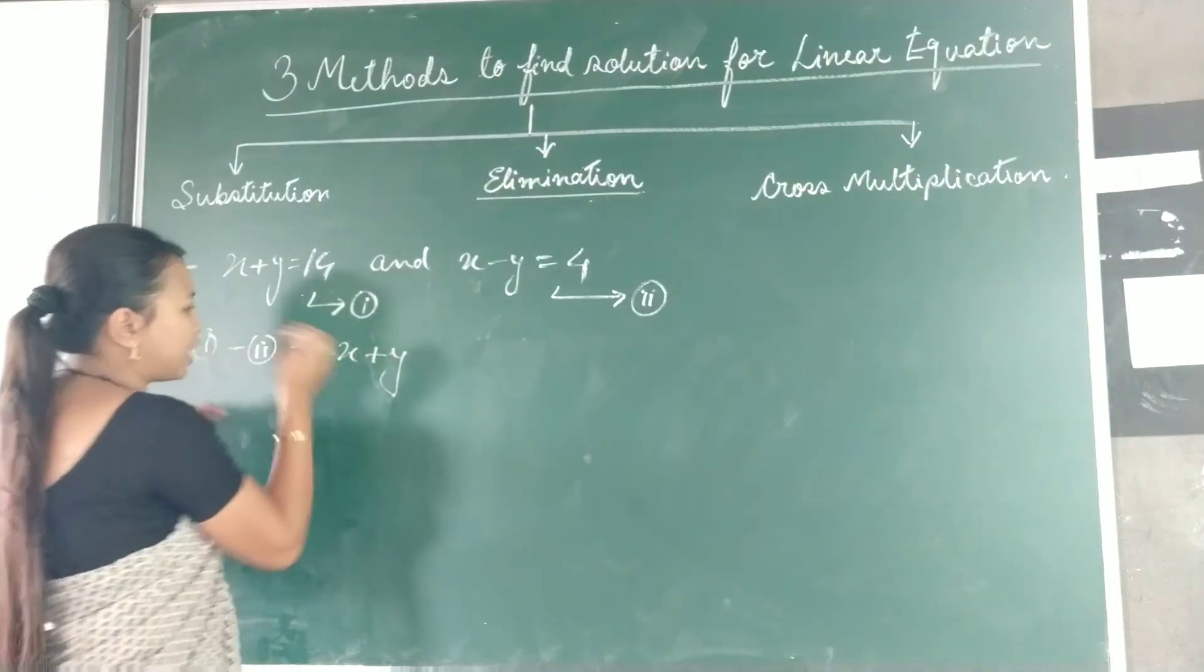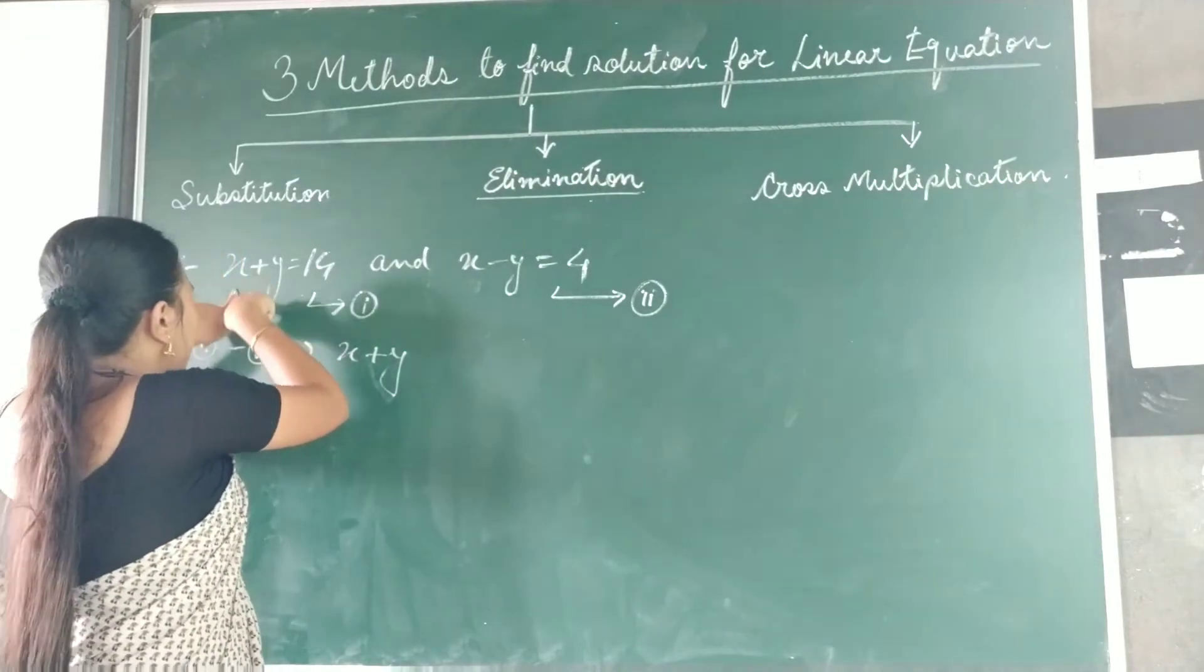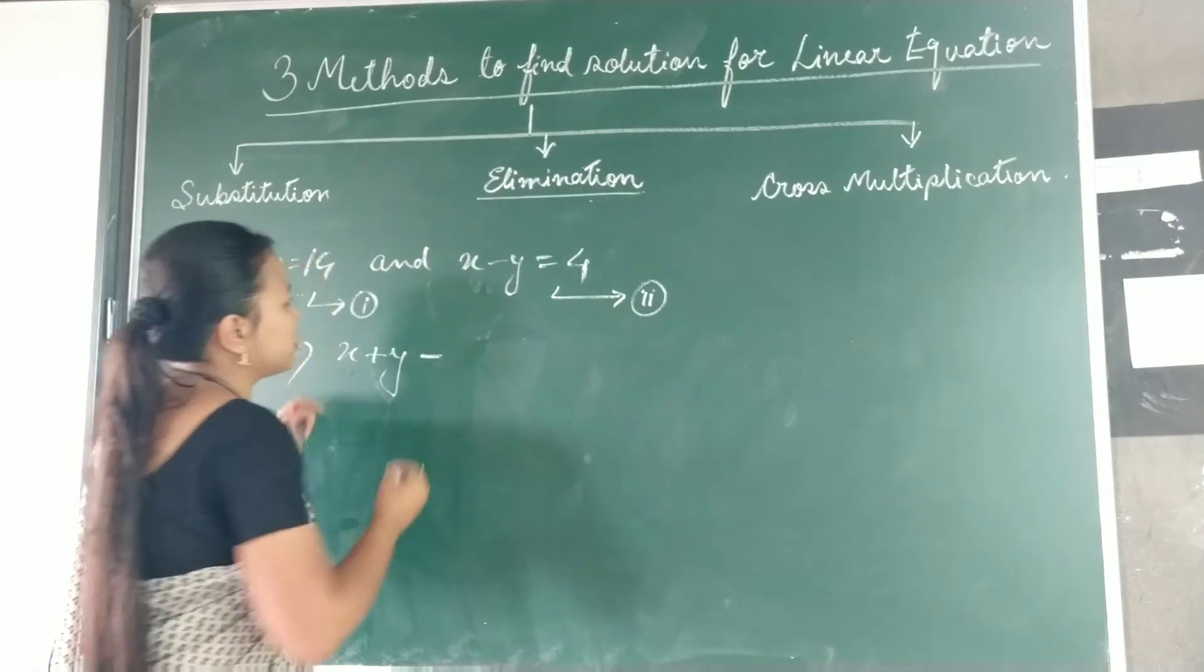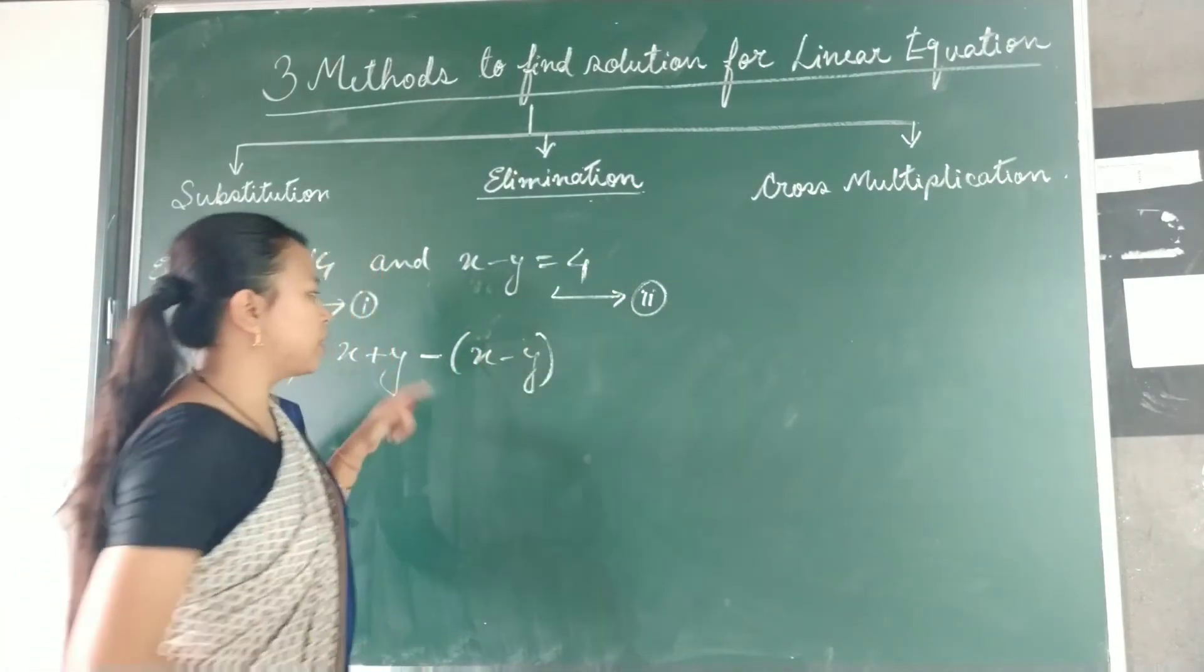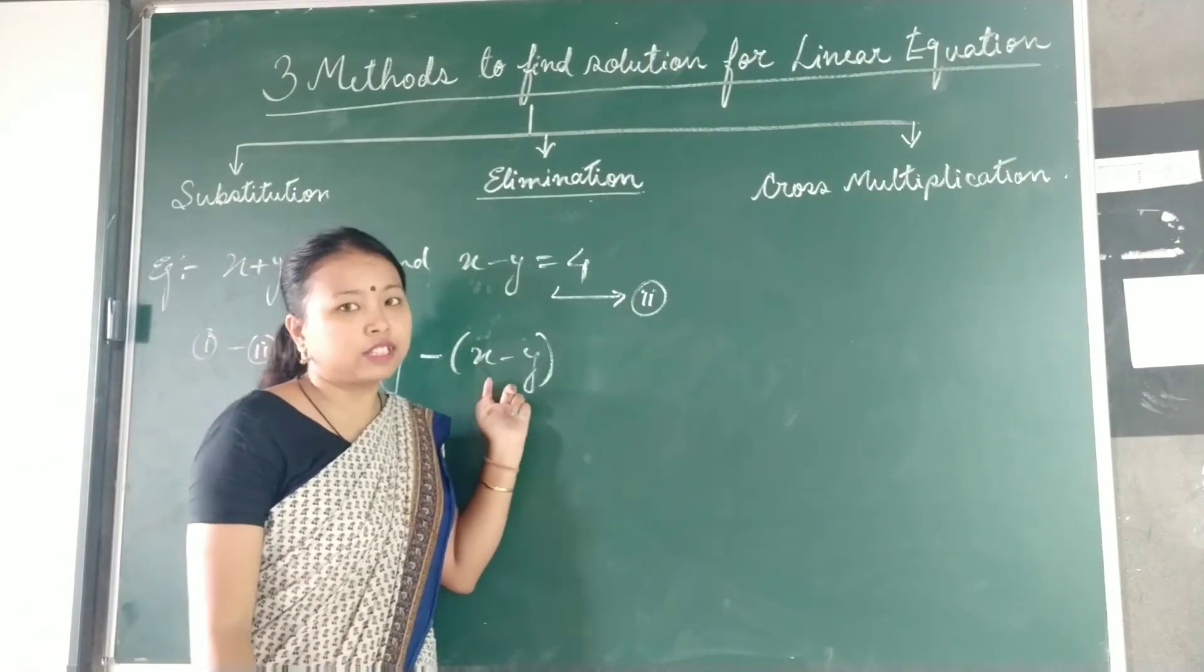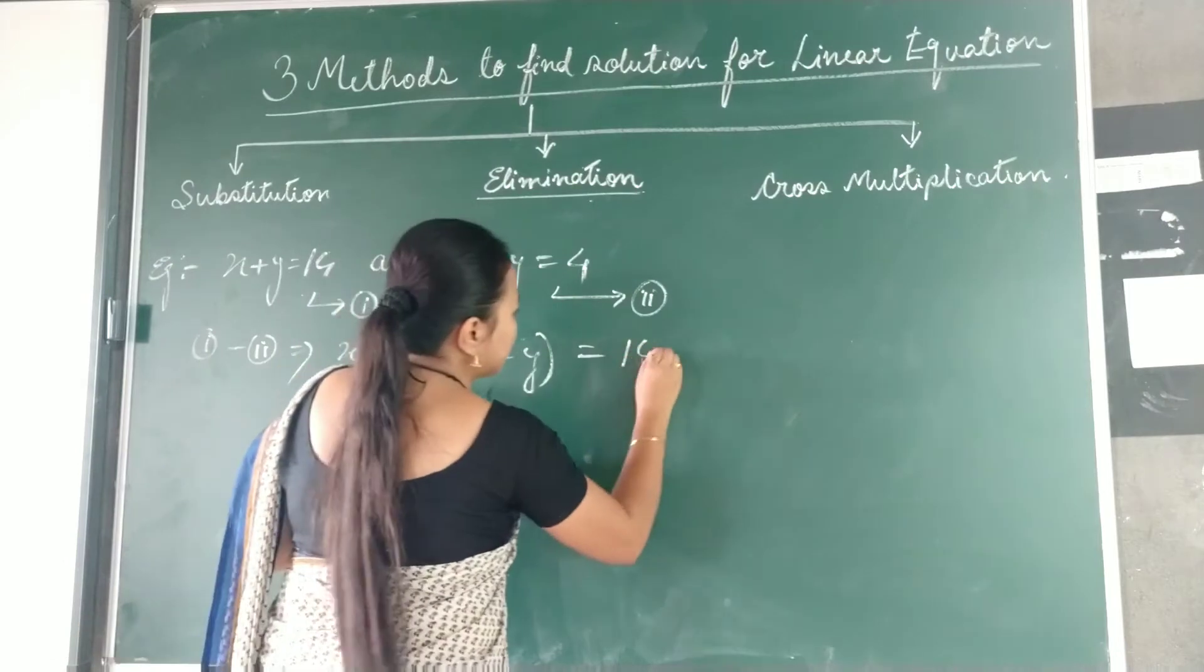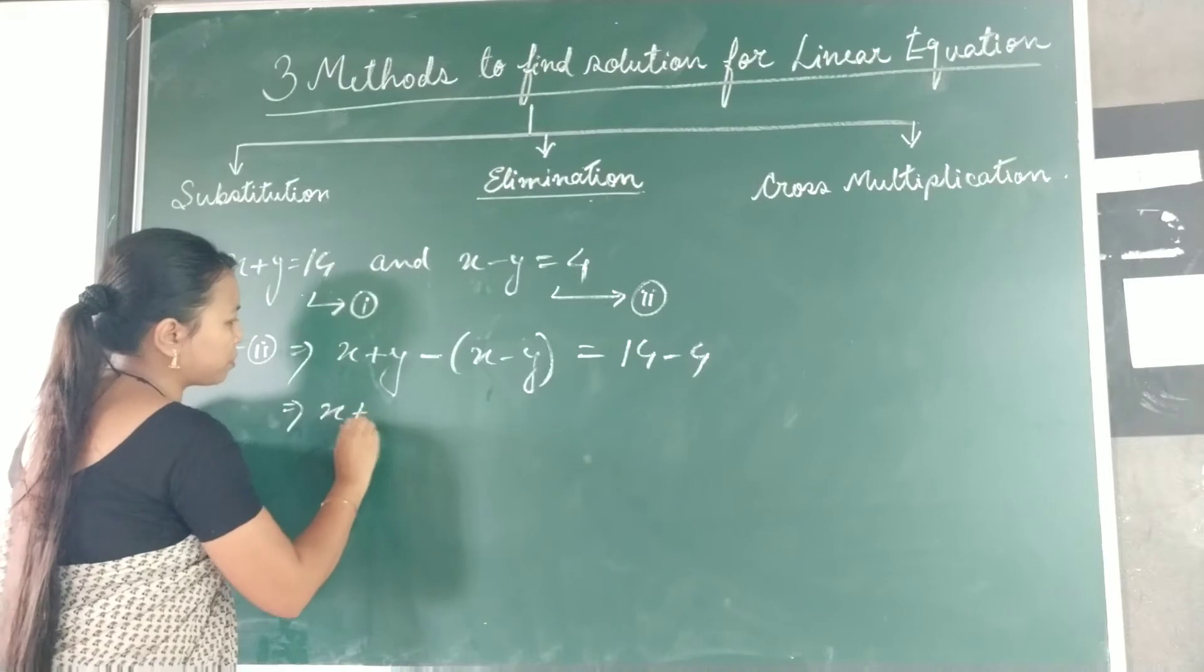x plus y - I can do the left-hand side minus the left-hand side of the second equation. So left-hand side of the first equation is x plus y, and minus the left-hand side of the second equation is x minus y. Put this minus in a bracket. Equals right-hand side of first equation minus right-hand side of second equation: 14 minus 4.